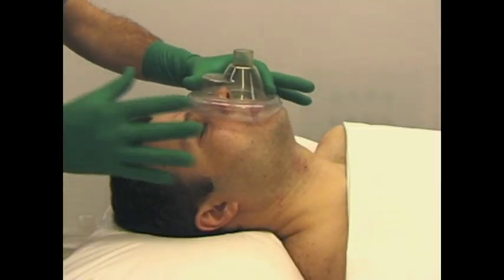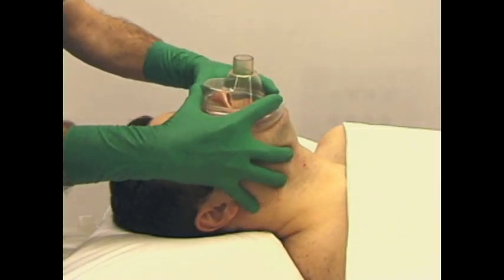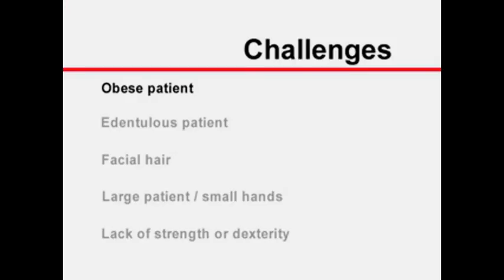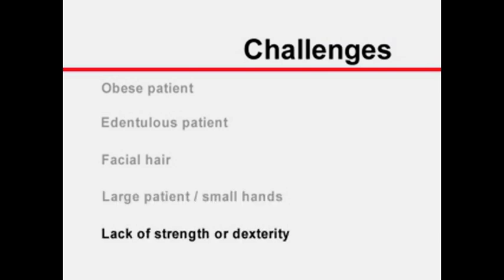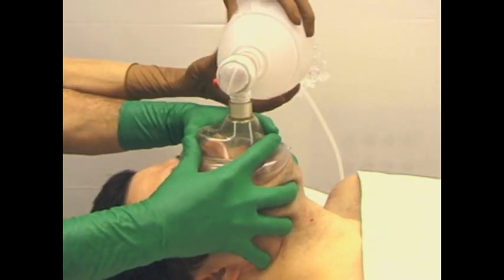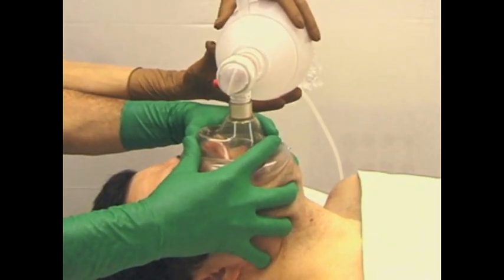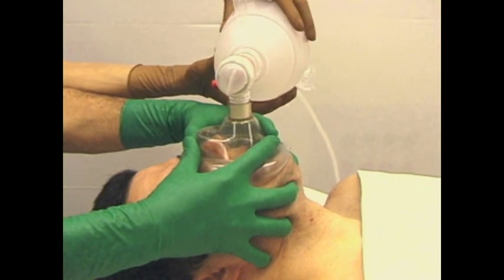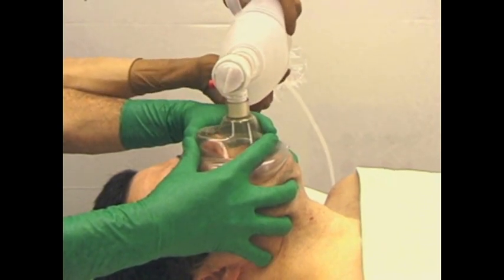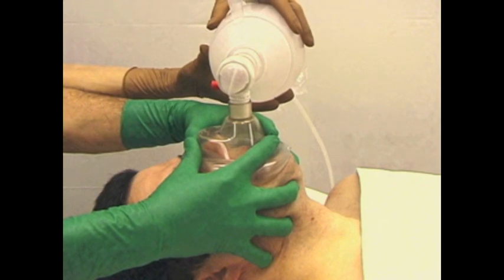It may be difficult or impossible to maintain an adequate seal using only one hand. This challenge can occur in obese or edentulous patients or in those with abundant facial hair. Additionally, large patients may present a challenge for individuals with small hands or with insufficient manual strength or dexterity. In these situations, the mask can be held with two hands, with each hand positioned as described in the one-hand technique, while a second person compresses the bag valve device.